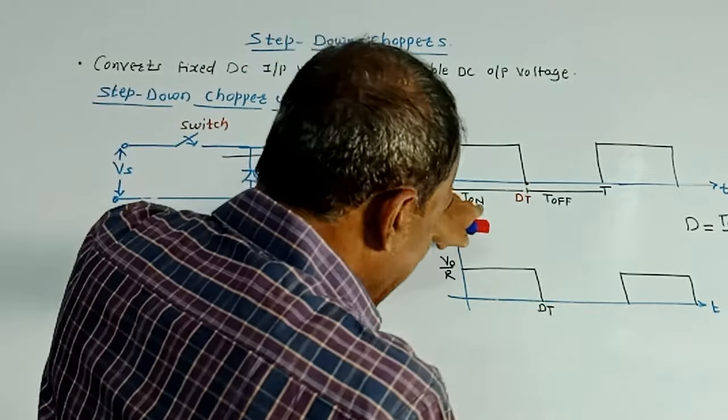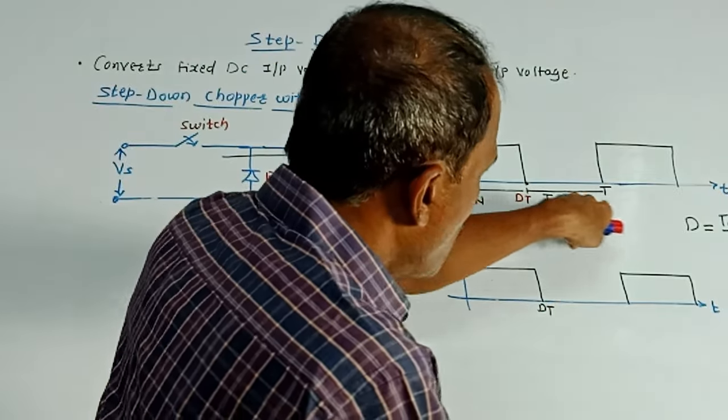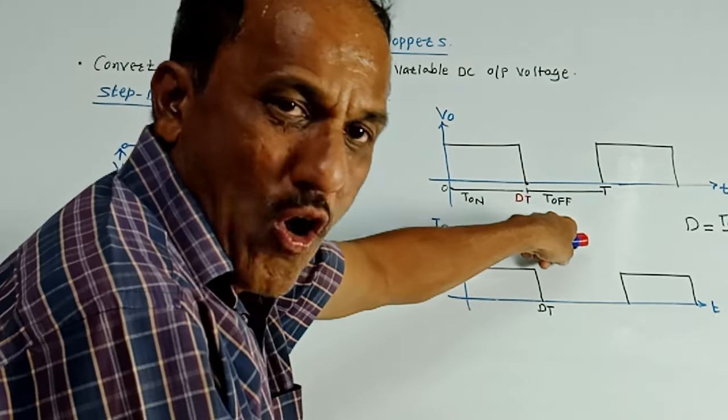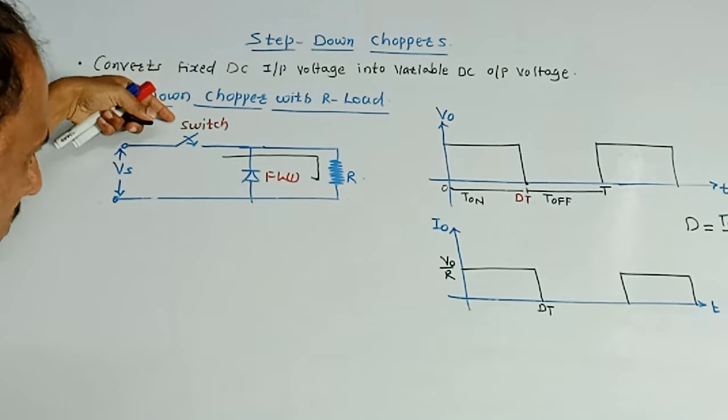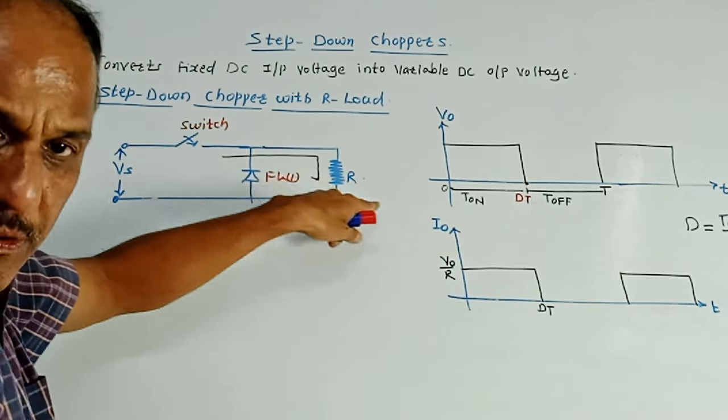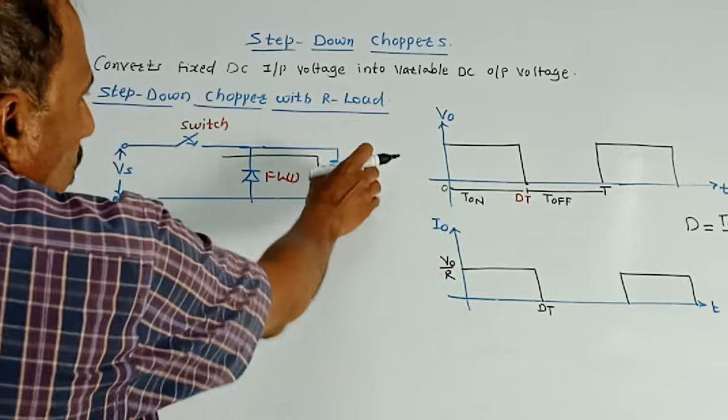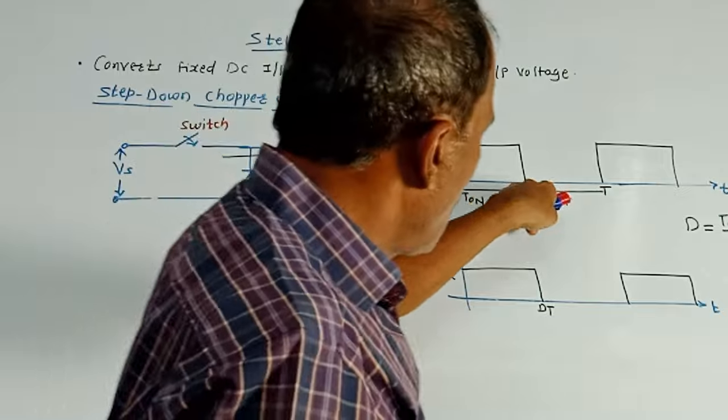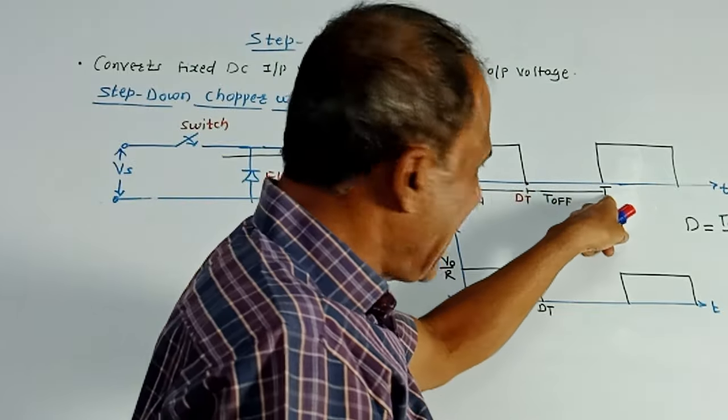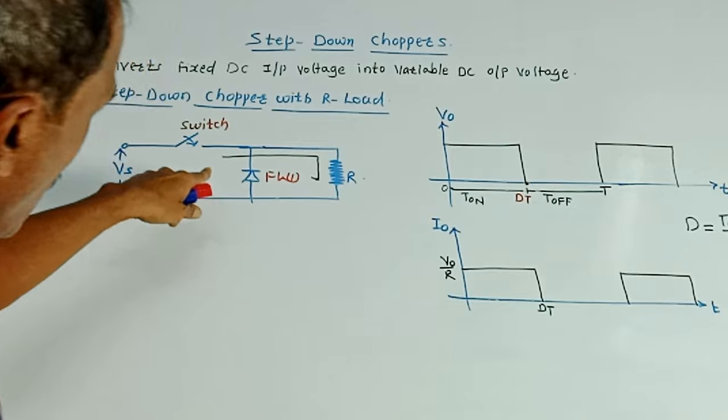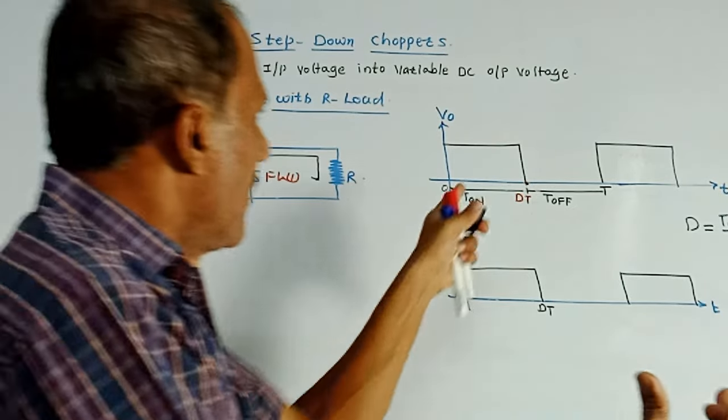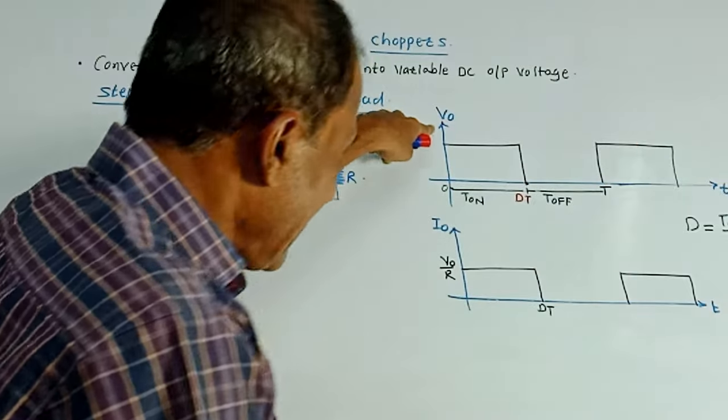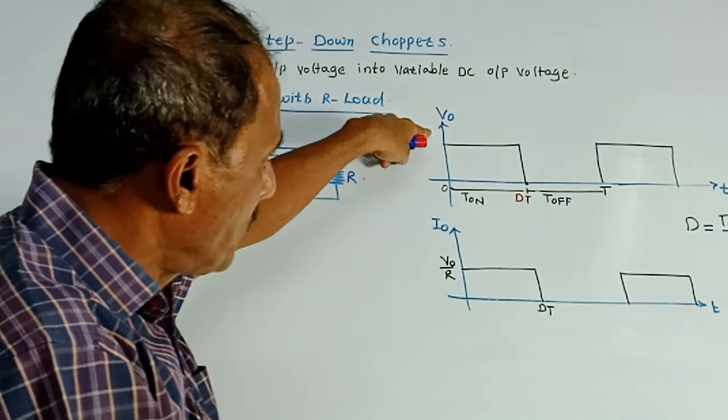After certain time period, at the end of T on, we will switch off this, we will open this switch. That means this is T off time period. So we will open this switch. Whenever the switch is open, input and output will not be connected. Means no output, you are not getting anything at the output because it is open circuited. So you are not getting anything at the output. Again after T, cycle repeats. So depending on the closing and opening of switch, we are getting the variable DC voltage at the output. This is the graph of V0, that is output voltage versus time.